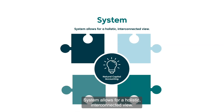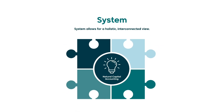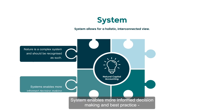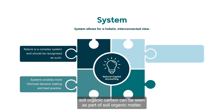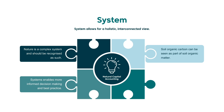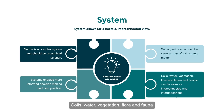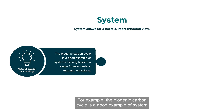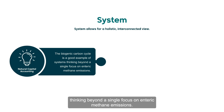System allows for a holistic, interconnected view. Nature is a complex system and should be recognised as such. System enables more informed decision making and best practice. Soil organic carbon can be seen as part of soil organic matter. Soils, water, vegetation, flora and fauna and people can be seen as interconnected and interdependent. For example, the biogenic carbon cycle is a good example of system thinking beyond a single focus on enteric methane emissions.